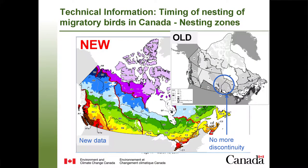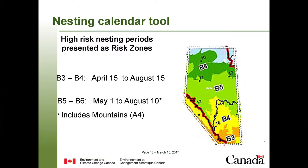The nesting tool is being updated and improved with more data and better modeling techniques. We had some discontinuities in the old tool, and we now have finer resolution regions. You can go in and figure out where your activity occurs and which zone, and look at our best estimates of when you would find the majority of breeding activity. These windows are an example covering about 90% of the breeding birds you would find.